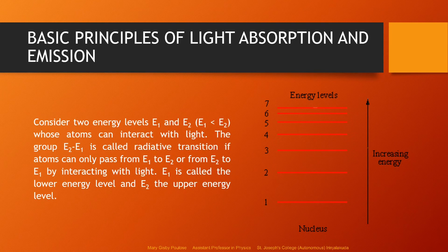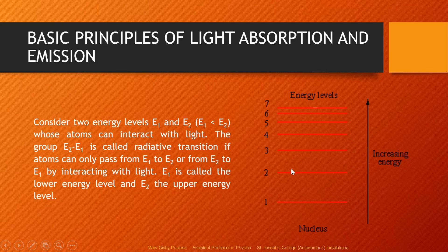Consider two energy levels E1 and E2, where E1 is the lower and E2 is the upper energy level. Atoms in these energy levels can interact with light via radiative transitions. If they move from E1 to E2 they absorb light; if they move from E2 to E1 they emit light. In 1917, Einstein explained the different radiative transitions possible in a material and predicted the possibilities for stimulated emission.